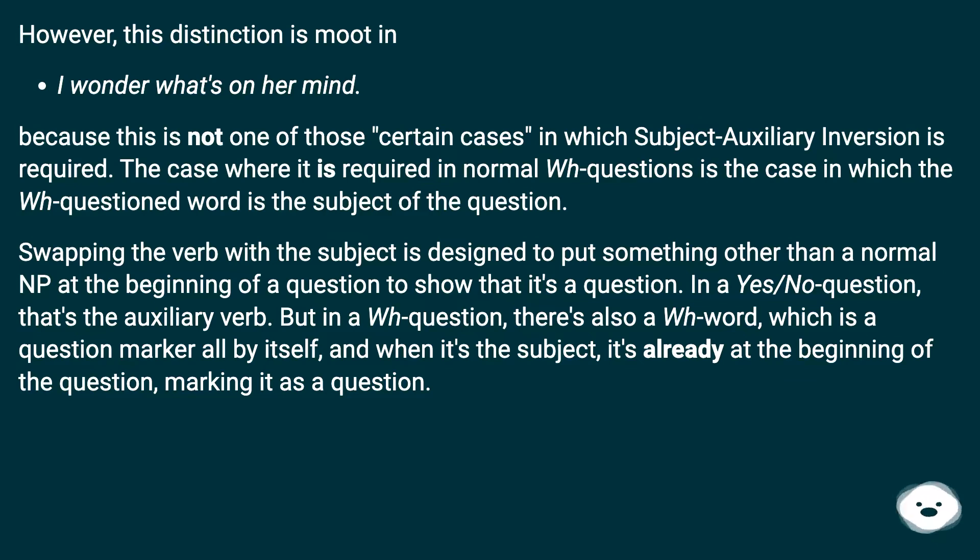Swapping the verb with the subject is designed to put something other than a normal NP at the beginning of a question to show that it's a question. In a yes/no question, that's the auxiliary verb. But in a WH question, there's also a WH word, which is a question marker all by itself. And when it's the subject, it's already at the beginning of the question, marking it as a question.